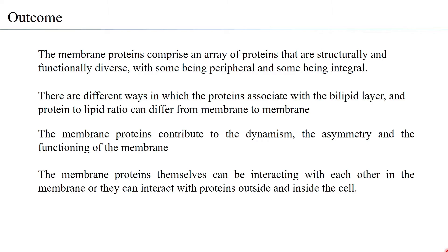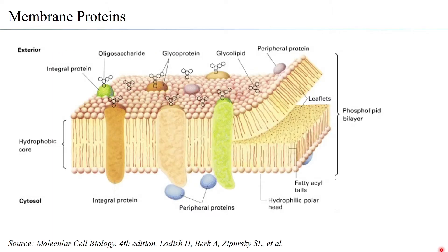Membrane proteins can interact with each other in the membrane or with proteins outside and inside the cell. According to Singer-Nickelson's fluid mosaic model, membrane proteins are classified into two types: peripheral proteins (also called extrinsic proteins) and integral proteins (also called intrinsic proteins). Integral proteins are embedded within the bilipid layer, while peripheral or extrinsic proteins are present on the outside of the bilipid layer — on the outer or inner leaflet — and are not embedded within it.